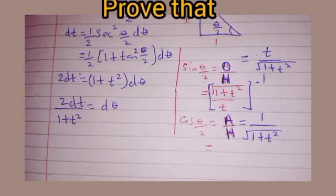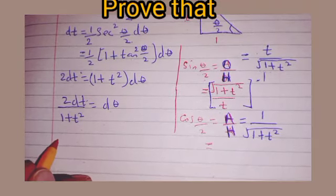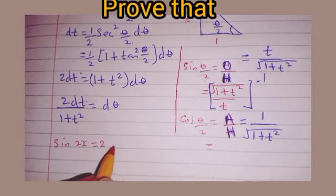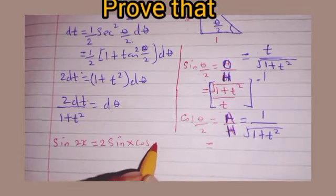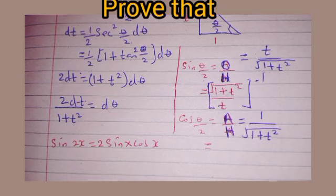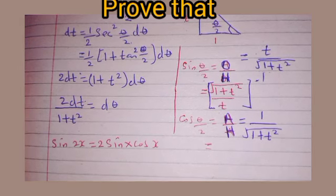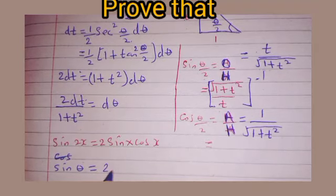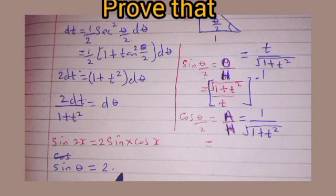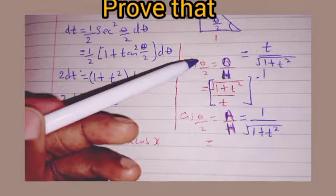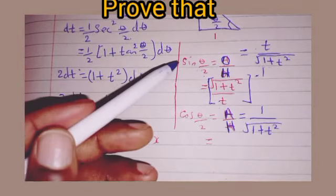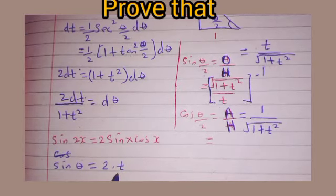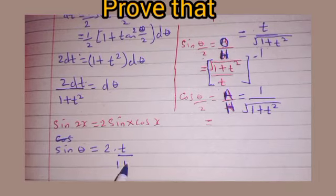We are going to make use of the double angle formula, which tells us that sin(2x) = 2 sin(x)cos(x). So we substitute to get sin θ = 2 × sin(θ/2) × cos(θ/2). Substituting the values, sin θ = 2 × t/√(1+t²).